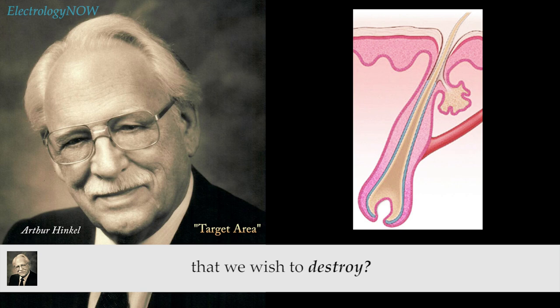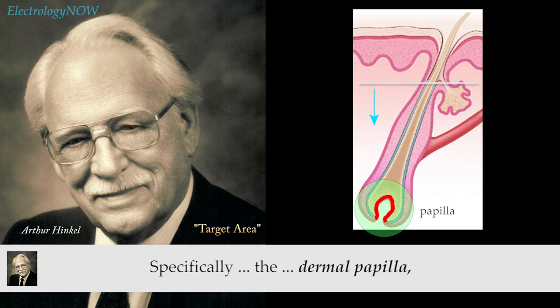Where are the portions of the follicle that we wish to destroy? The lower two-thirds of the follicles — specifically, the dermal papilla, or the dermal papilla cell. That's where the hair receives its nourishment.